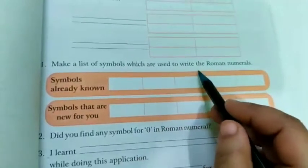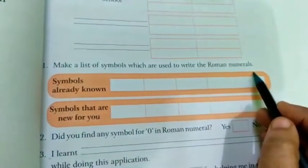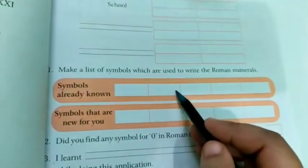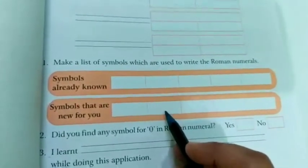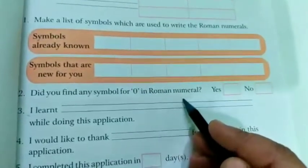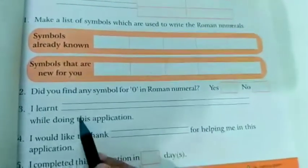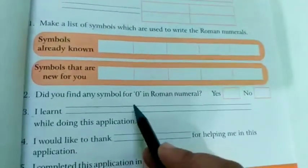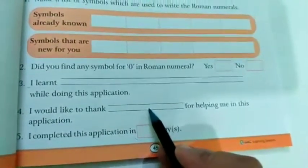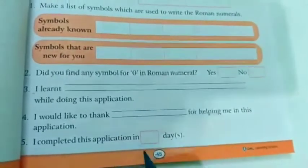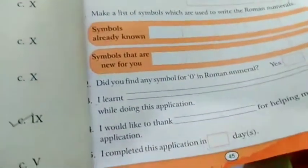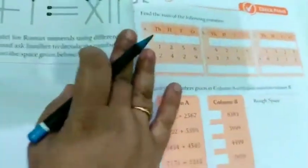Make a list of symbols which are used to write the Roman numerals. Symbols already known, jo aapko symbols already pata thae, aur jo abhi aapke liye new hai. Did you find any symbol for zero in Roman numerals? Aapko zero ka koi roman number mila? No. I learned, while doing this application I learned, aapne kya learn kia? Roman numbers. I would like to thank, jisne aapko yi application me help kia uska name liko. I completed this application in 10 days. In how many days you have done? So write that.